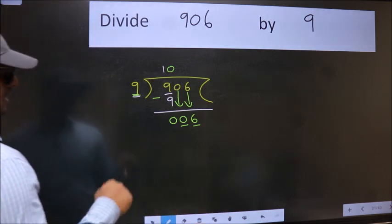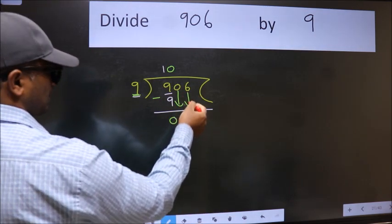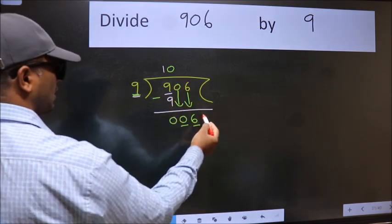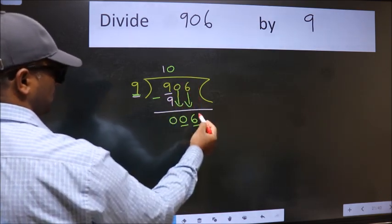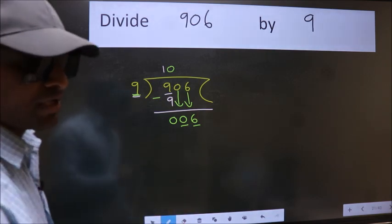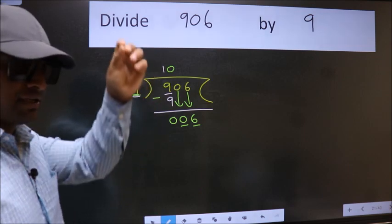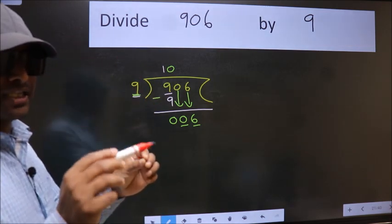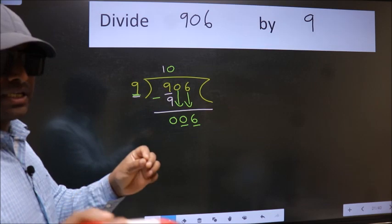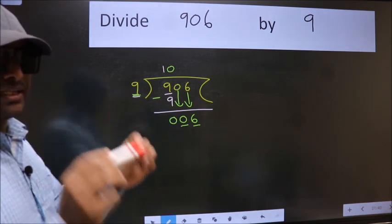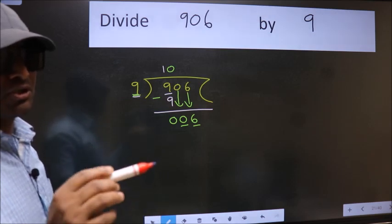Because just now you brought this number down. And in the same step, you want to put dot take 0, which is wrong. I repeat: bring down the number and also put dot take 0, both at the same step. You should not do.